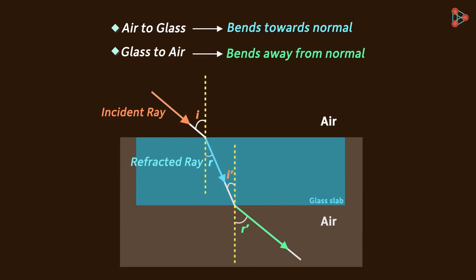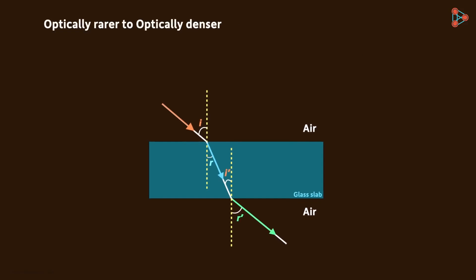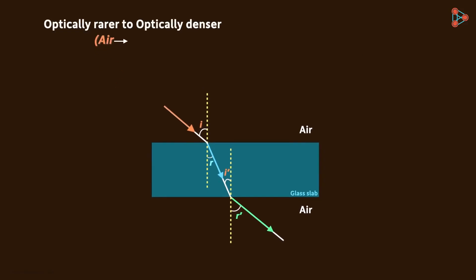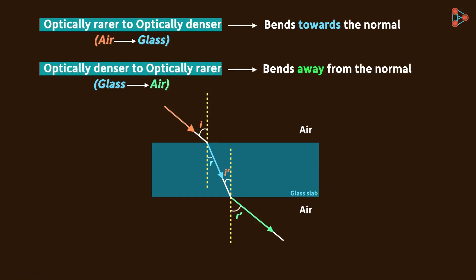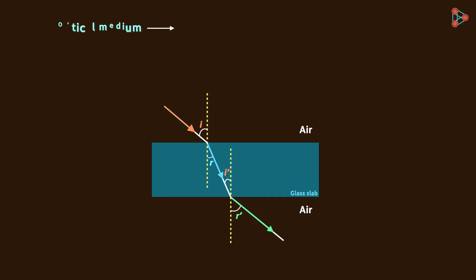The ray going from one medium to another is called the incident ray. In the second medium it is called the refracted ray, and the ray coming out in the third medium — which is air — is called the emergent ray. So light traveling from air to glass is the incident ray, in glass it is the refracted ray, and coming out it is the emergent ray.